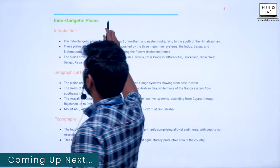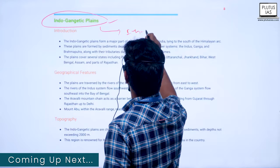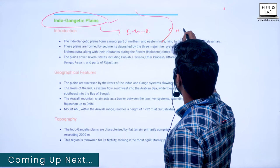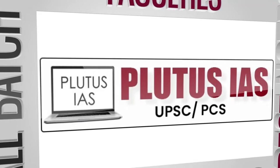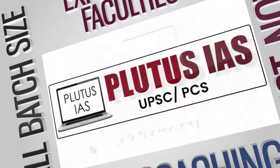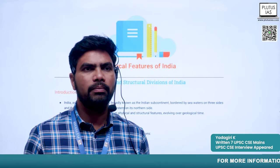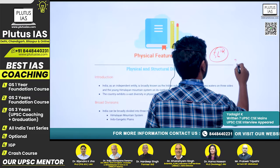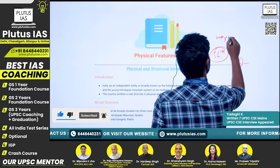Now we will see about the second physiographic division of India, that is the Indo-Gangetic Plains. We also sometimes call this the Indo-Gangetic and Brahmaputra Plain, because the Brahmaputra river also forms a plain in northeast India and in the West Bengal region. Good morning students, welcome back to Plutus IAS. Today is our 36th day; we have successfully completed 35 topics, and today we are going to start the Geography subject.